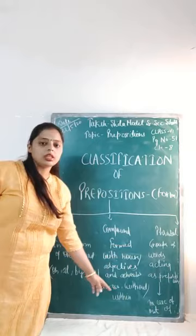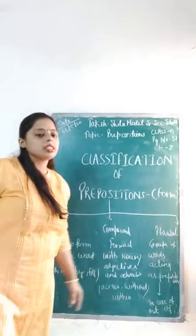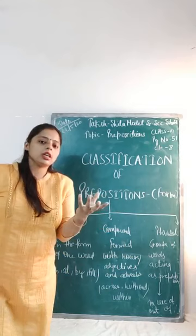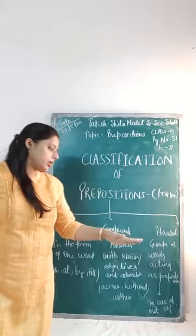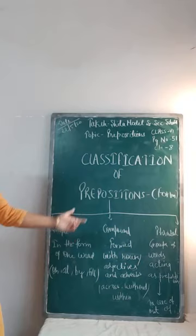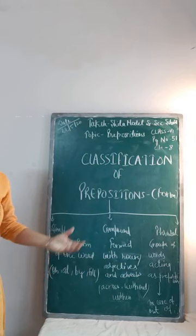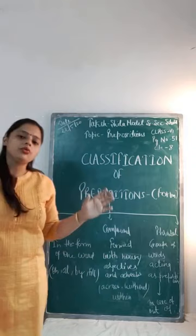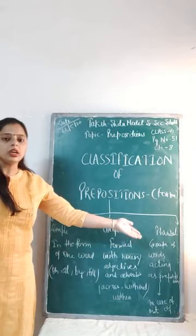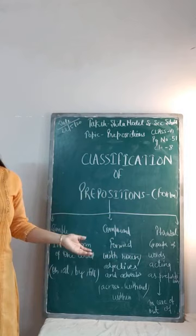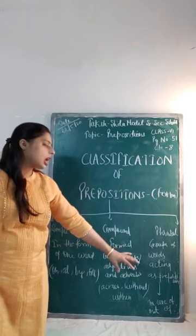The last form is phrasal prepositions. Phrasal means a group of words — sometimes with meaning, sometimes without. A group of words acting as a preposition is known as a phrasal preposition. For example: 'in case of' or 'out of.' 'In case of a fire, you should sound the fire alarm.' 'Out of ignorance, people end up breaking rules.' Here 'out of' is a phrasal preposition.